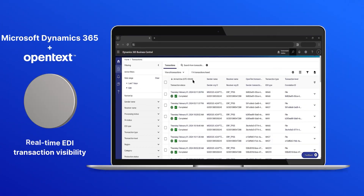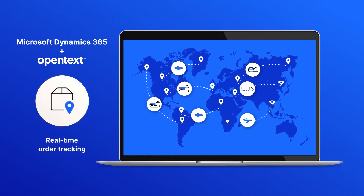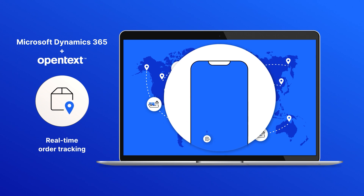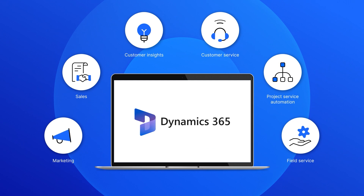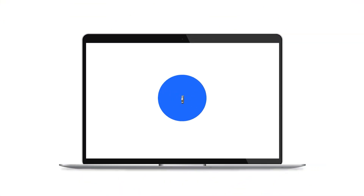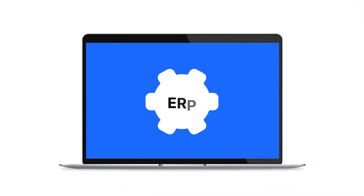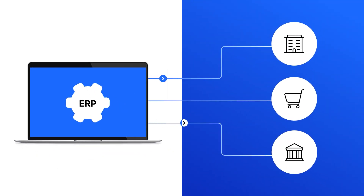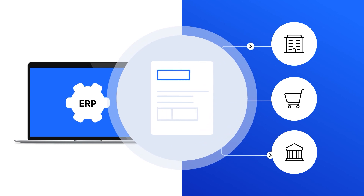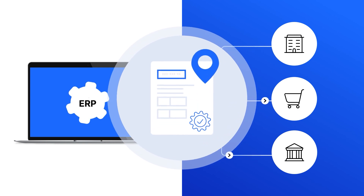You can call on real-time order tracking information and alert buyers and sellers to any delays using embedded shipment intelligence. Need to customize your Microsoft Dynamics 365 integration? OpenText can tailor its pre-built ERP adapters to your requirements, offering a rapid setup and a high degree of flexibility to support customization and business growth.